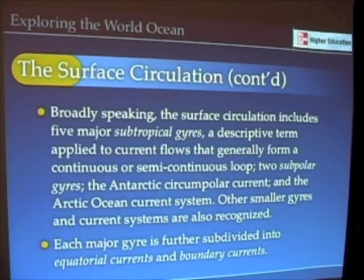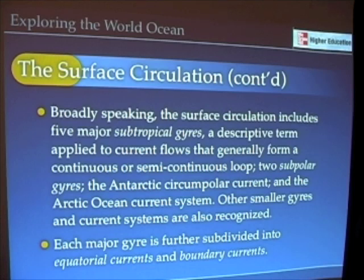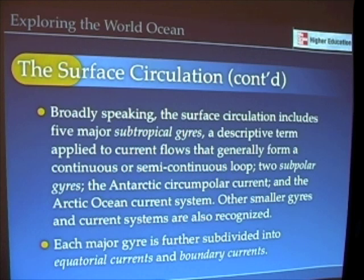Before we talk about the specific currents associated with the surface circulation, let's look at some general patterns. The surface circulation really centers around five major subtropical gyres. Subtropical just means below the tropics — basically adjacent to, just north and just south of the tropics in the northern and southern hemispheres. Gyres describe a circular motion of waters that form a continuous or semi-continuous loop.